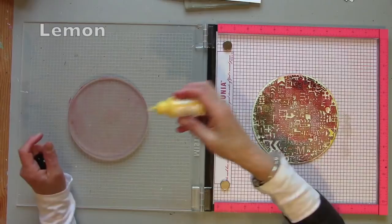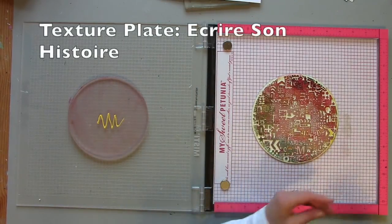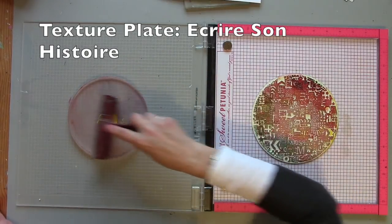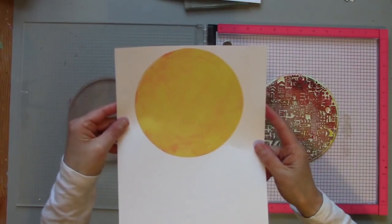This time I'm going to do something slightly different. So I'm just putting a single colour on first. So I've just got a simple, flat, yellow background.